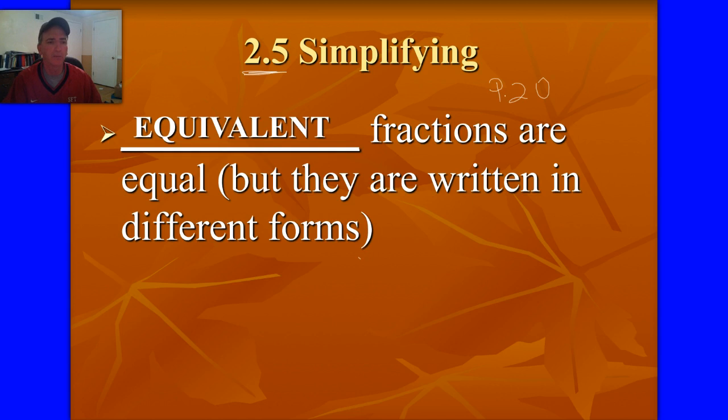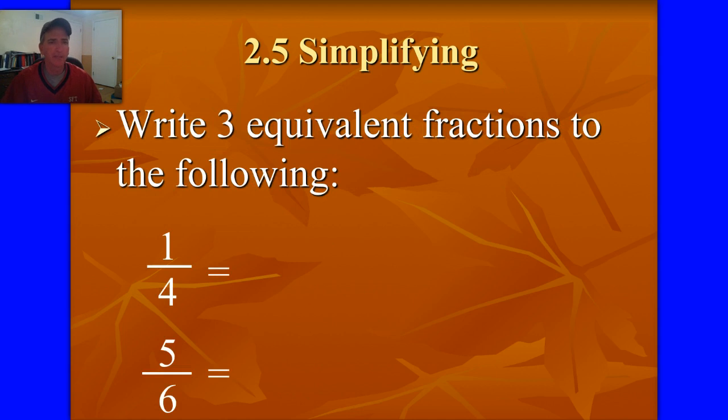Equivalent fractions are fractions that are equal. These are two fractions that are equal but written in a different form. The first thing we need to be able to do is to create equivalent fractions. So you have one-fourth. One equivalent fraction of one-fourth would be two-eighths. All I did is I multiplied the top and the bottom number by the same thing. That creates an equivalent fraction.